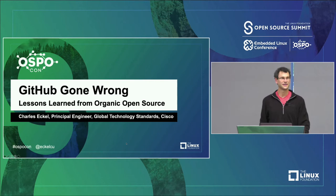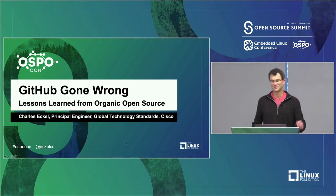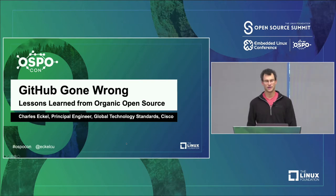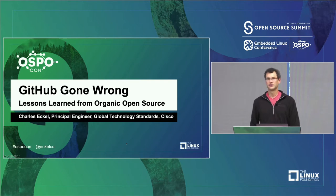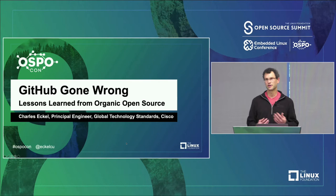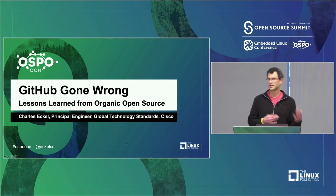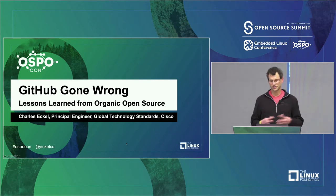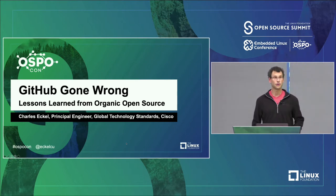Hello everyone, thanks for being here. It's a real pleasure to be here in person. My name is Charles Eccle. I work at Cisco in our global technology standards group. I obviously work a lot with standards, but I also — partly because I'm passionate about open source, and because there's a lot of ties between standards and open source — I deal a lot with open source. There are a lot of passionate people doing quite a lot of good things with open source inside of Cisco.